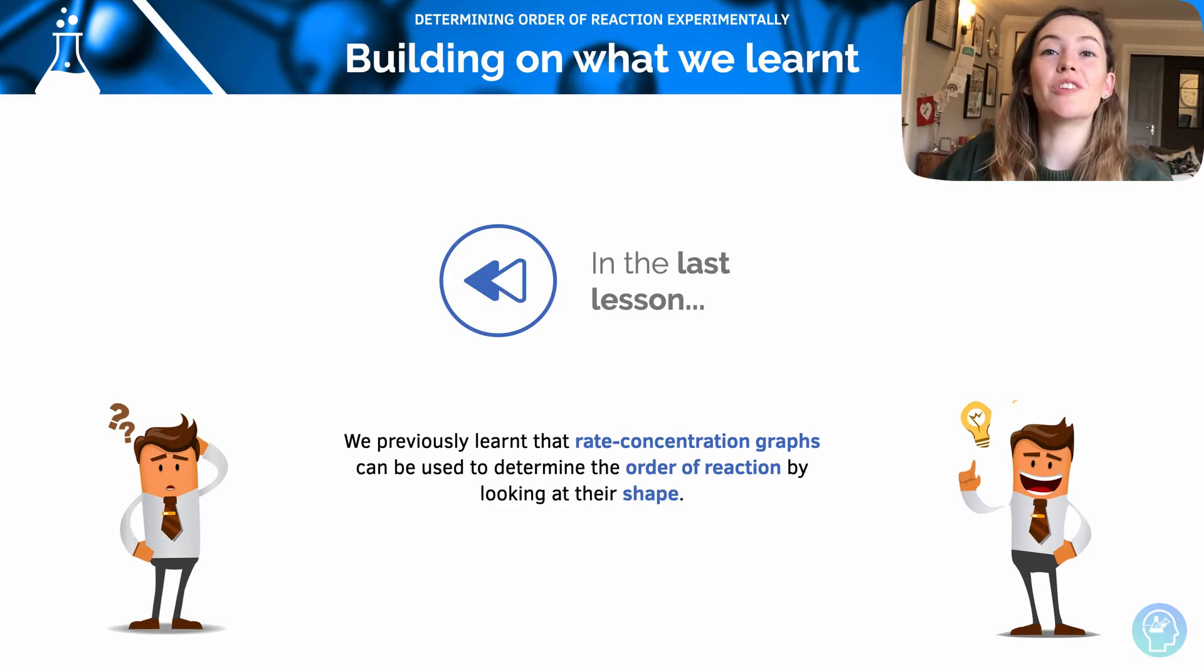Hi and welcome to this lesson on determining the order of reaction experimentally. In the last lesson we had a look at graphs and how we can determine the order of a reaction with respect to the reactant being investigated using the graph.